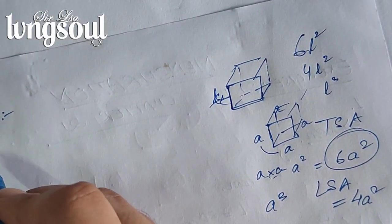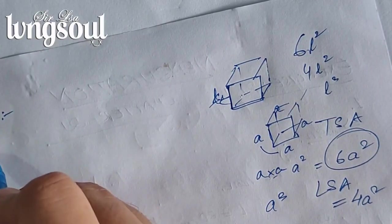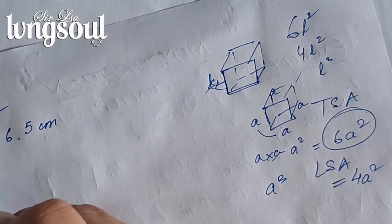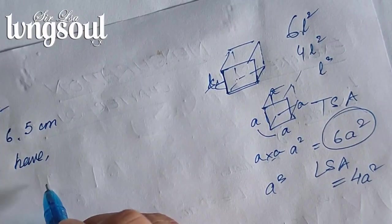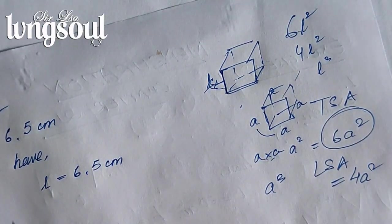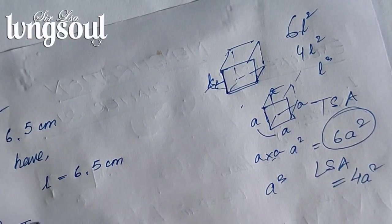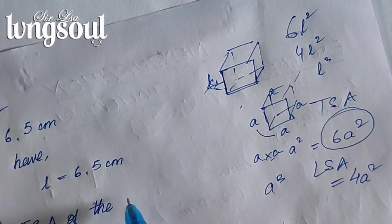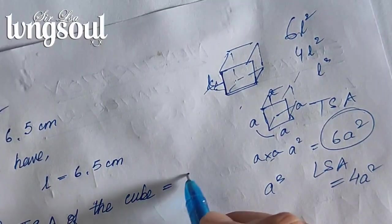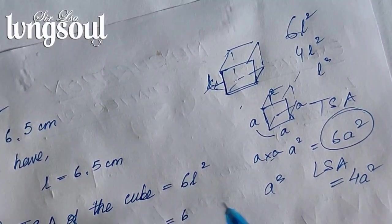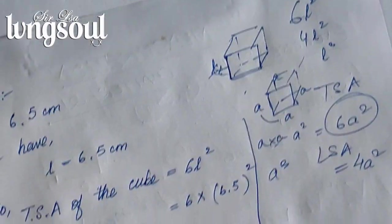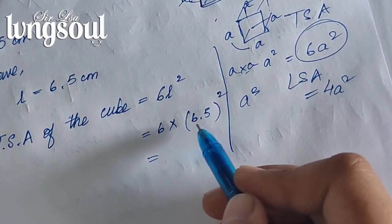Question number 2 solution: we are given L is equal to 6.5 centimeters, which is the side of the cube. Finding the total surface area (TSA) of the cube using the formula: TSA = 6L squared = 6 times (6.5) squared.